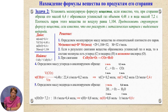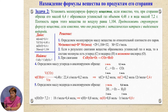Similarly, we determine the mass of hydrogen. For one mole of water, 2 moles of hydrogen atoms are consumed, so ν(H) = 2 × ν(H₂O). We find ν(H₂O) = 7.2 / 18 = 0.4 mol, giving ν(H) = 0.8 mol and m(H) = 0.8 g.